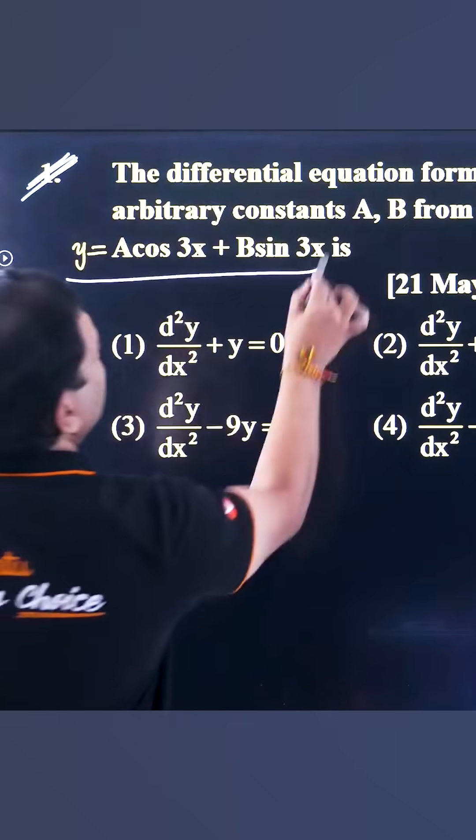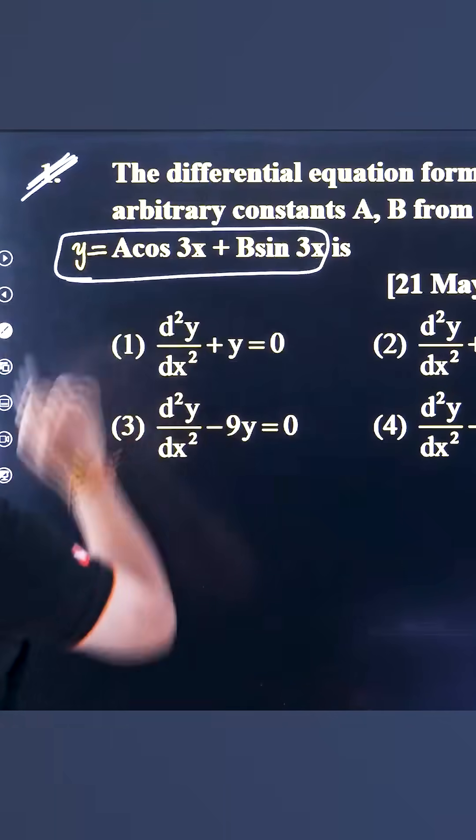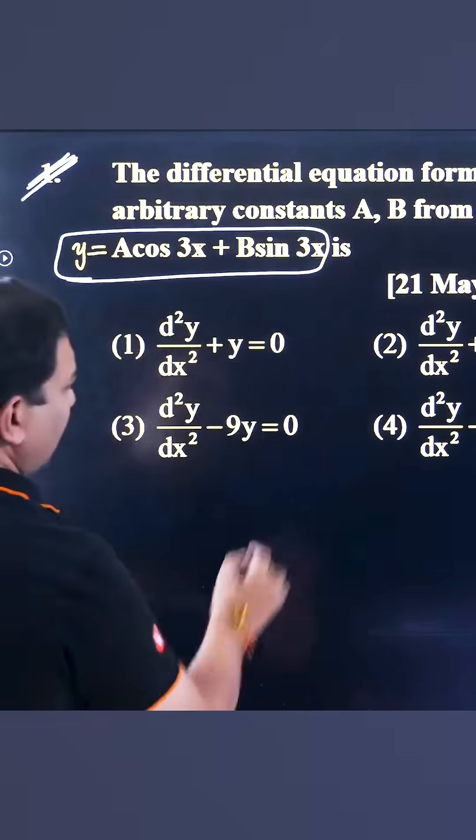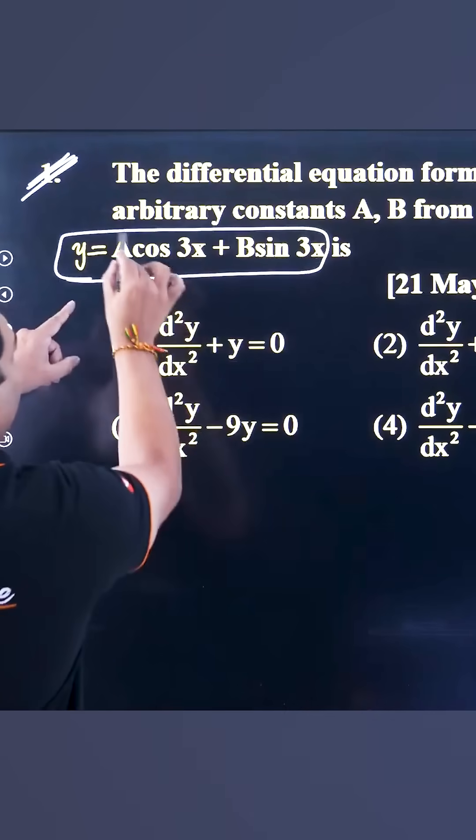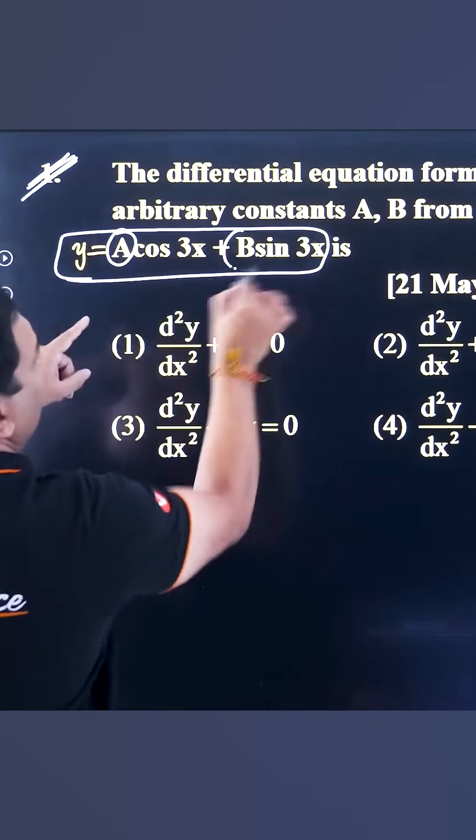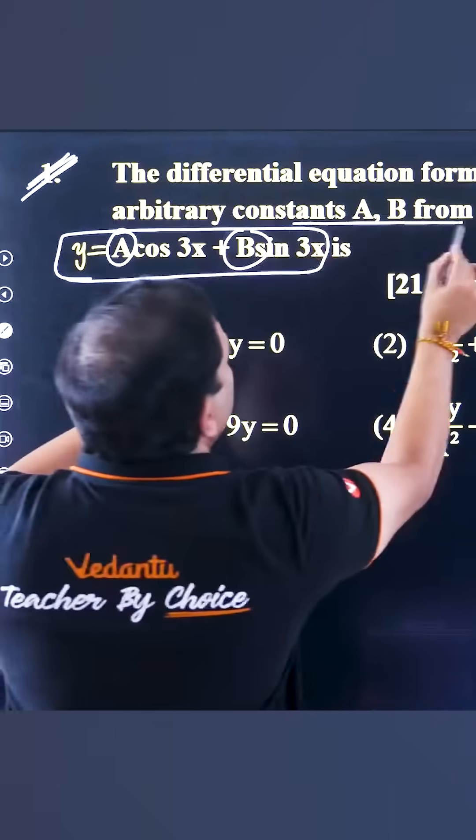So y is equal to a cos 3x plus b sin 3x. What is the answer? Here, a and b are arbitrary constants.